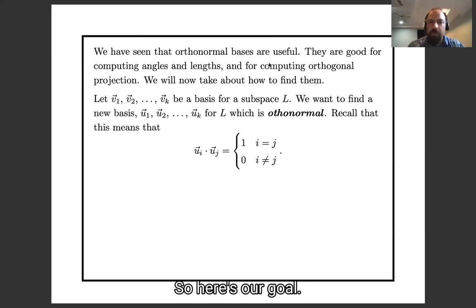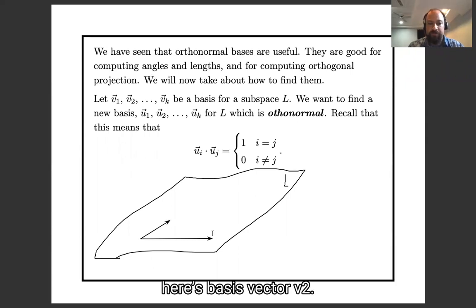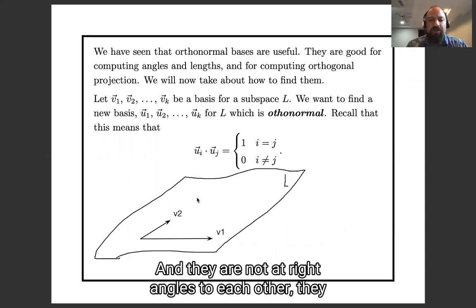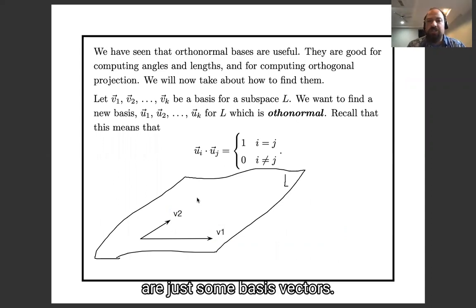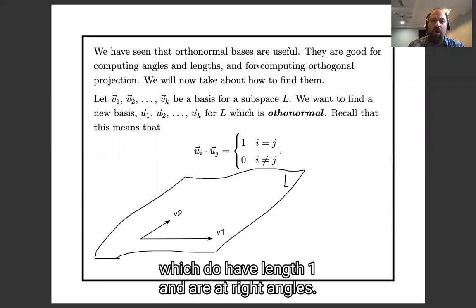So here's our goal. Our goal is that our starting point is some subspace L. Maybe it's the image or the kernel of some map. Let's represent it just pictorially by some two-dimensional space L. And in that subspace L, we have a basis. Here's basis vector v1, here's basis vector v2. And v1 and v2 do not have length one, and they are not at right angles to each other for just some basis vectors. And we want to replace them by better basis vectors, which do have length one and are at right angles.